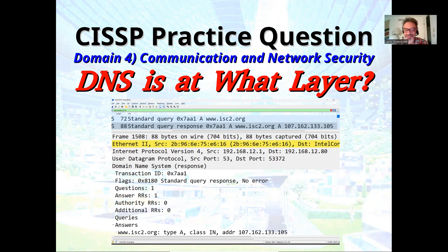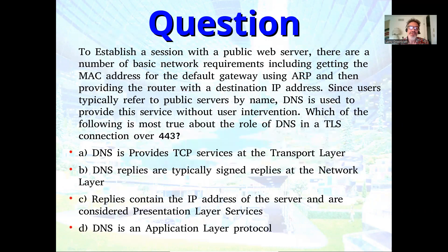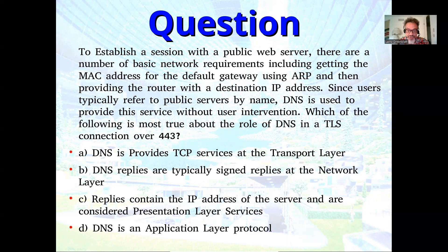It depends. The question goes: to establish a session with a public web server, there are a number of basic network requirements, including getting the MAC address of the default gateway using ARP — the address resolution protocol — and then providing the router with the destination IP address. Since users typically refer to servers by name, DNS is used to provide this service without user intervention. Which of the following is most true about the role of DNS in a TLS connection over 443?